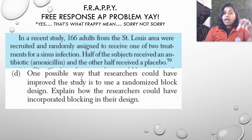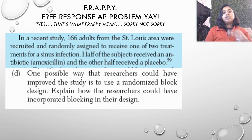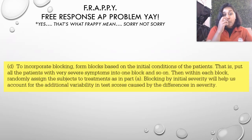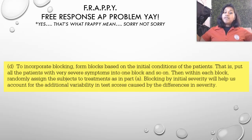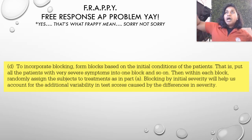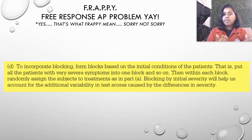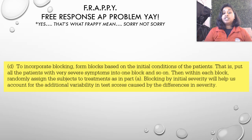Let's figure out how our 166 adults receiving one of two treatments for sinus infection could have been a randomized block experiment. We could have formed blocks based off of initial conditions — moderate, severe, and very severe symptoms are our three blocks. Within each block, we give one half amoxicillin and the other half the placebo, without subjects knowing, and hopefully without the experimenters knowing either — so it's double blind.